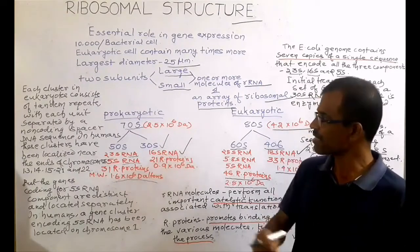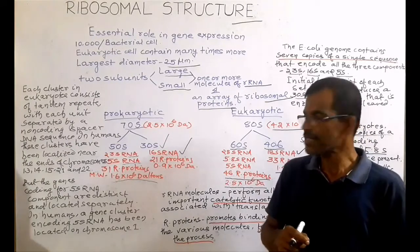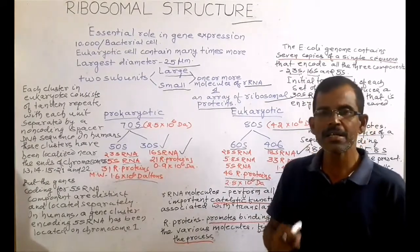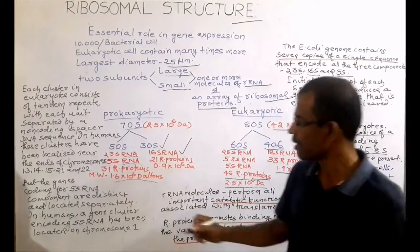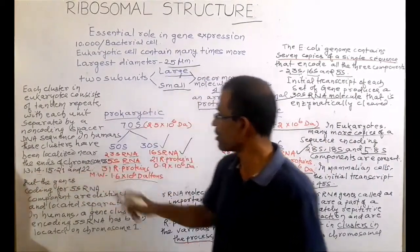In humans, these clusters have been localized near the ends of chromosomes 13, 14, 15, 21, and 22.